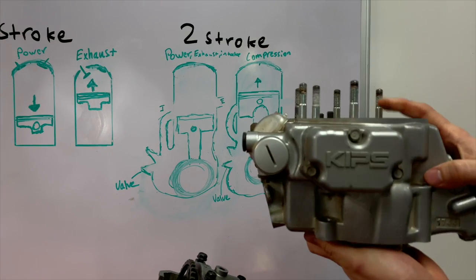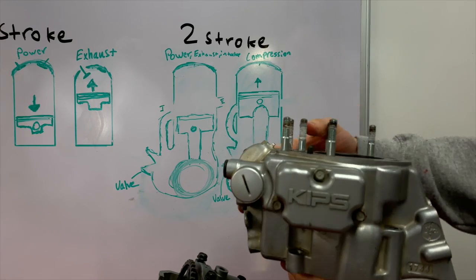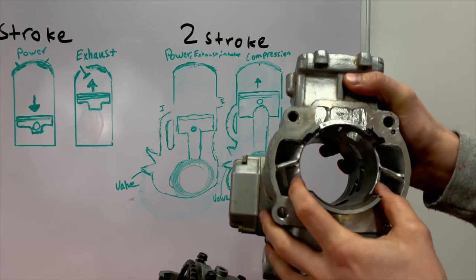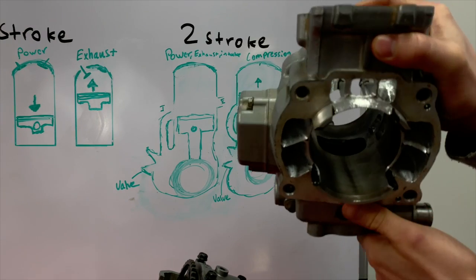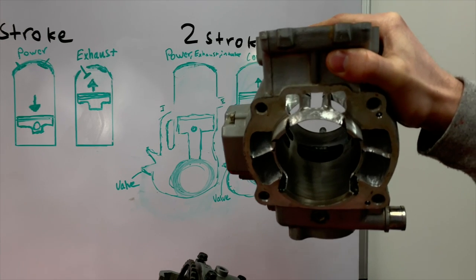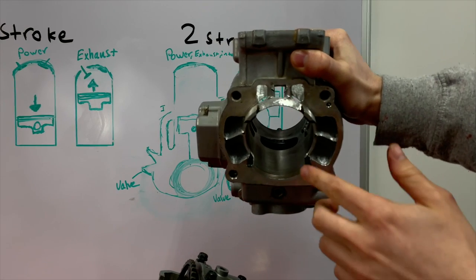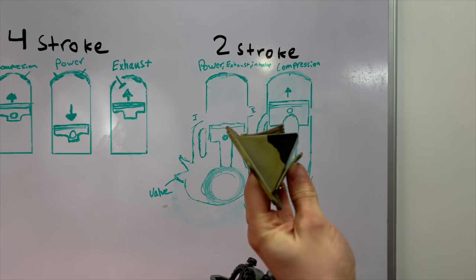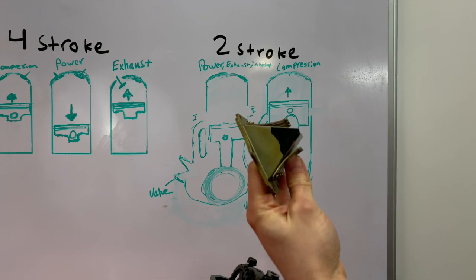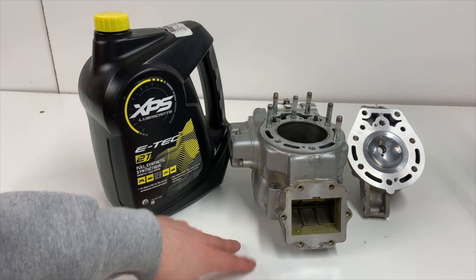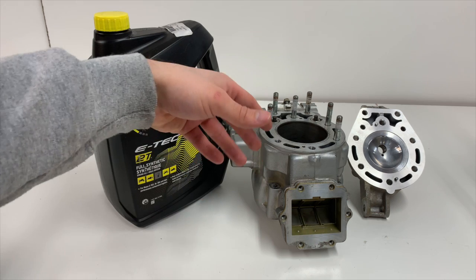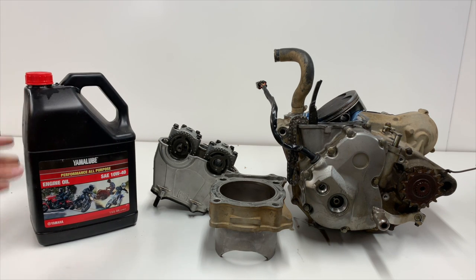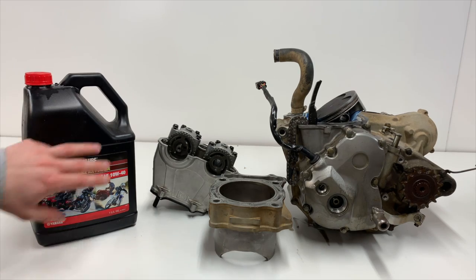The two stroke cylinder itself is actually a lot more complex than either the two stroke cylinder head or the four stroke cylinder. Looking at the intake or transfer ports, this is what brings in the fuel and air from the suction of the engine. The exhaust port is the biggest port and that's what takes exhaust gases out during operation. The reed valve here is the one-way valve — you can see if I push open these tabs it lets fuel and air in, and when closed it doesn't. For lubrication on a two stroke, you have a pre-mix that goes in with your fuel and air, plus a gear oil. On a four stroke, you just have gear oil that gets pumped through the entire engine and up into the top end.